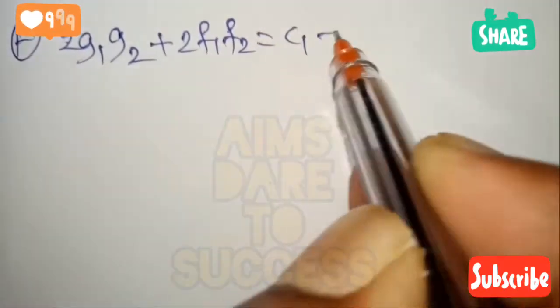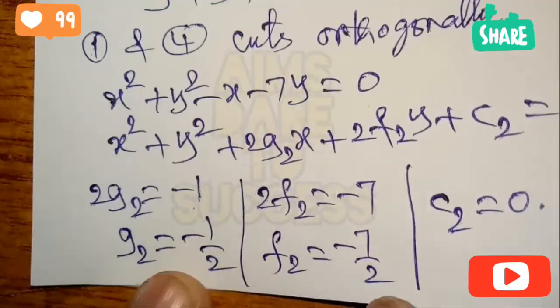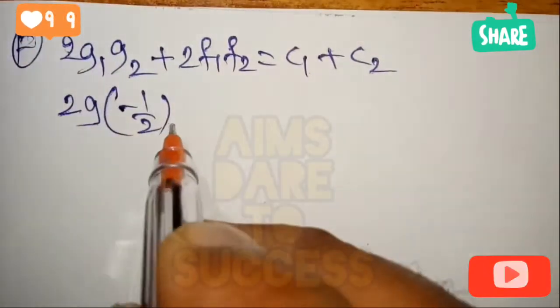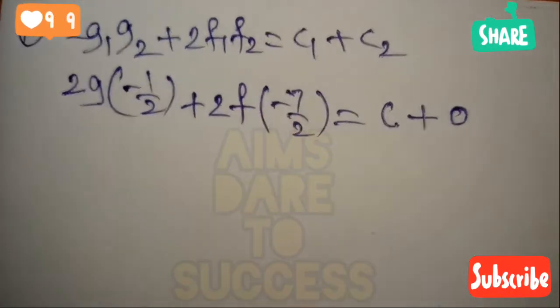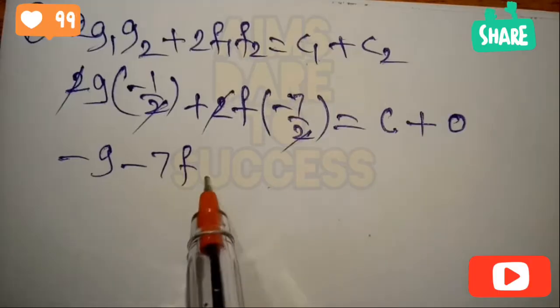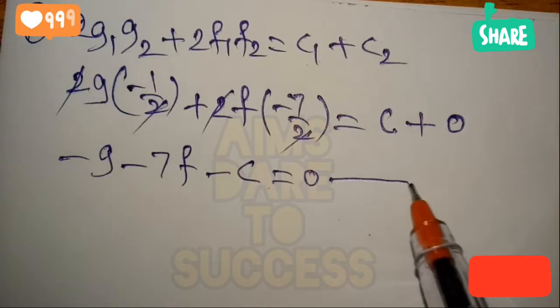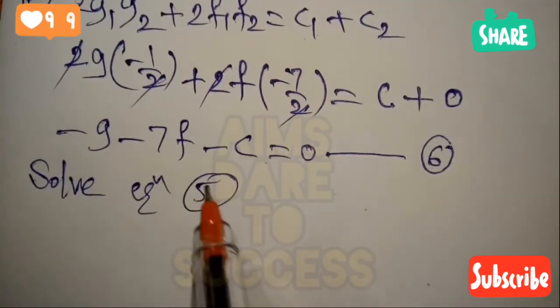Applying the orthogonality formula with equations 1 and 4: 2g₁g₂ + 2f₁f₂ = c₁ + c₂. Substituting: 2(g)(-1/2) + 2(f)(-7/2) = c + 0. Simplifying: -g - 7f = c, so -g - 7f - c = 0. Let this be equation 6.